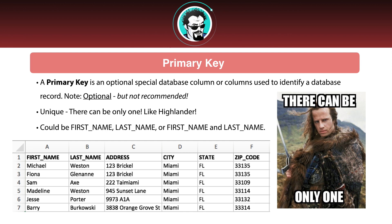Now we have the primary key. A primary key is technically optional, but you rarely see database tables without one. This is a special database column or columns used to uniquely identify a database record. It is optional but highly not recommended to omit it. It must be unique — like a Highlander, there can be only one.